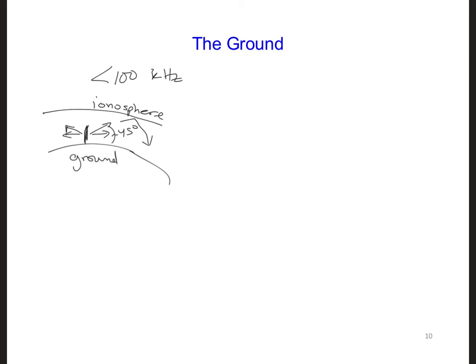Assume the typical ground parameters are sigma equals 0.01 and epsilon equals epsilon naught times 15. And since about 70% of the Earth is covered by oceans, let's also consider the electrical characteristics of ocean water as well. So for the ocean, sigma is about 3.3 and epsilon is about epsilon naught times 81.